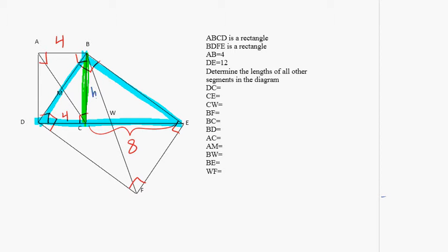So if I call this altitude H, I can say H squared equals 4 times 8, which is H equals the square root of 4 times 8, which is the square root of 4 times the square root of 4 times the square root of 2, which is 4 root 2.